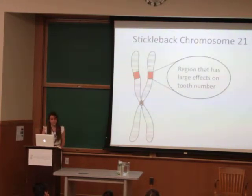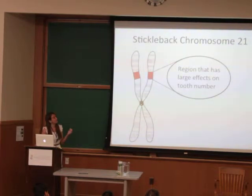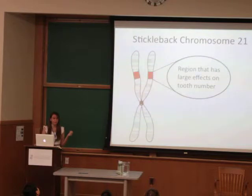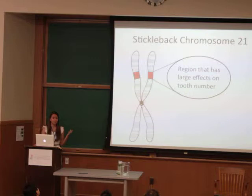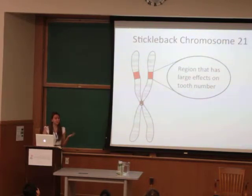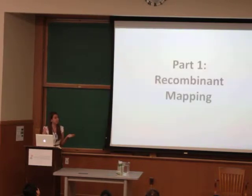Previous research has identified a region on stickleback chromosome 21 that controls a large amount of the variation in tooth number. This region contains many genes, and narrowing down the region was one of my goals for this summer. This brings me to the first part of my CERF project: recombinant mapping.